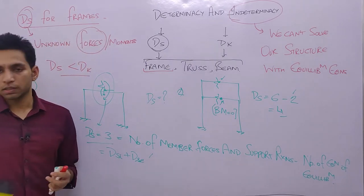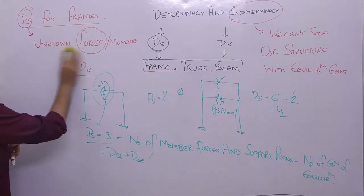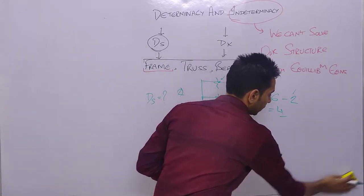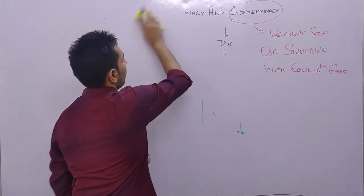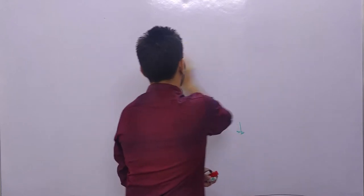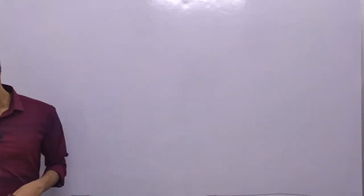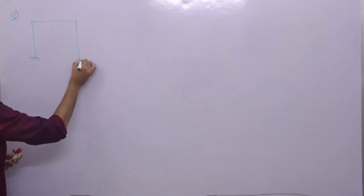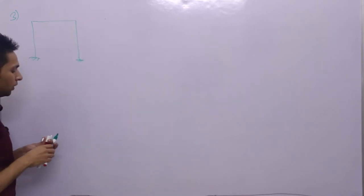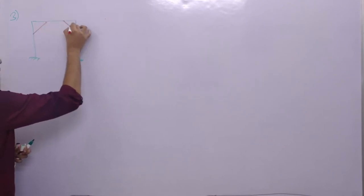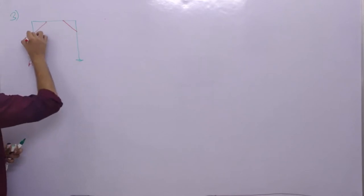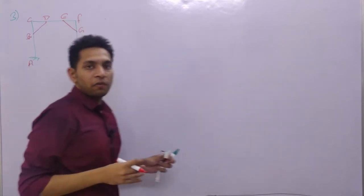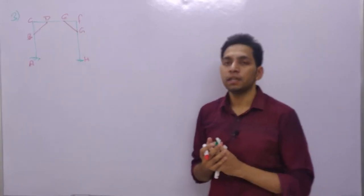The third question from frames involves a frame where a link is provided. Labeling the points A, B, C, D, E, F, G, and H, you have a link given between points B and D, and between E and G. You have to find the degree of static indeterminacy.